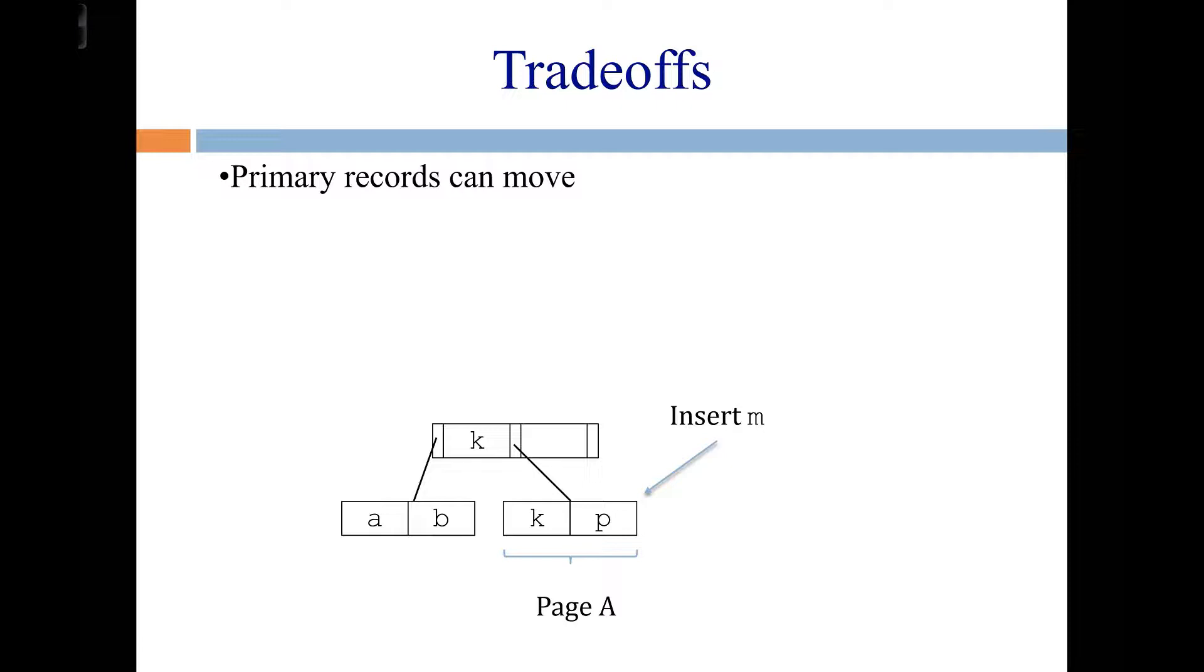So let's look at this simple little example with this small B-plus tree. If we insert an M, the location where it would go is right here in this page A. But page A is already full, so we're going to have to make a new node and redistribute things so that everything in the left node is less than everything in the right node, which means one of these two things, either the K or the P, depending on where we put the new node and how we redistribute, one of those two things is going to have to move into a different page.